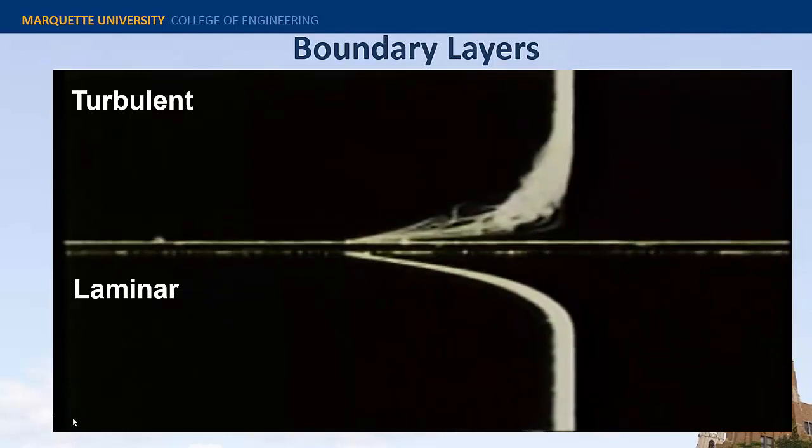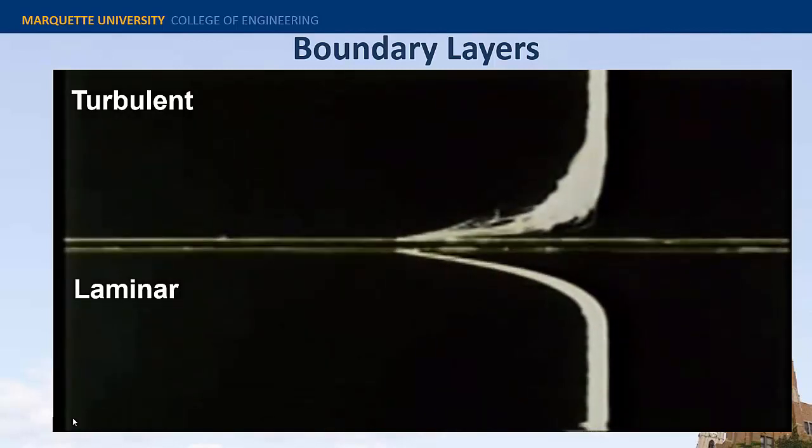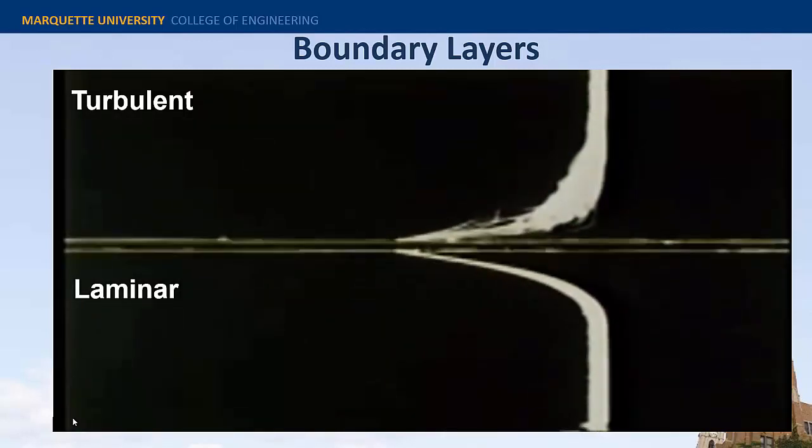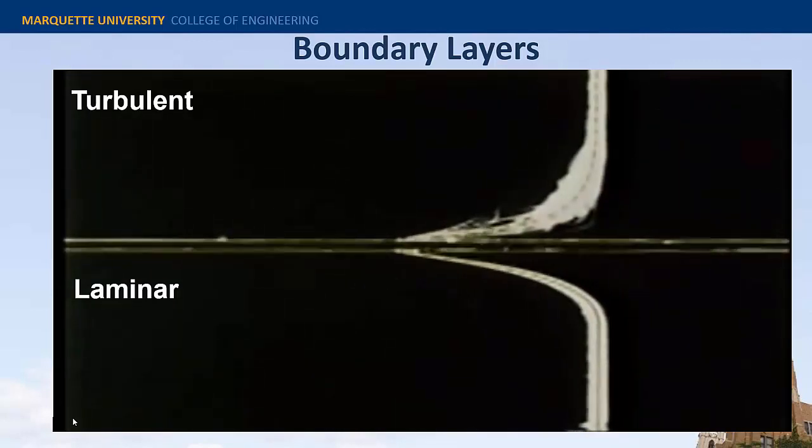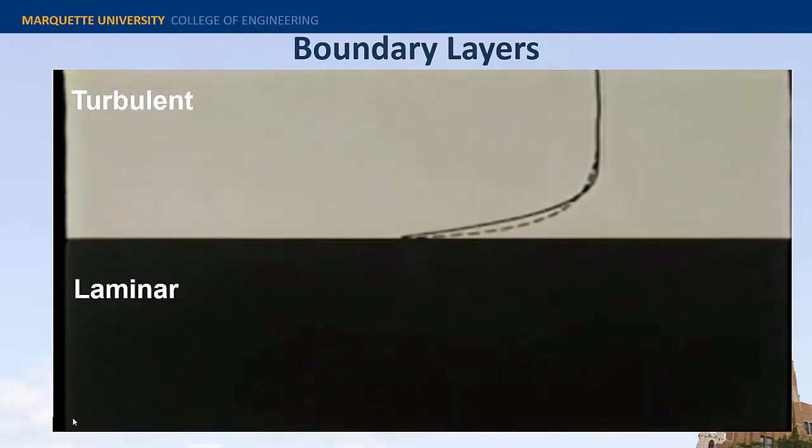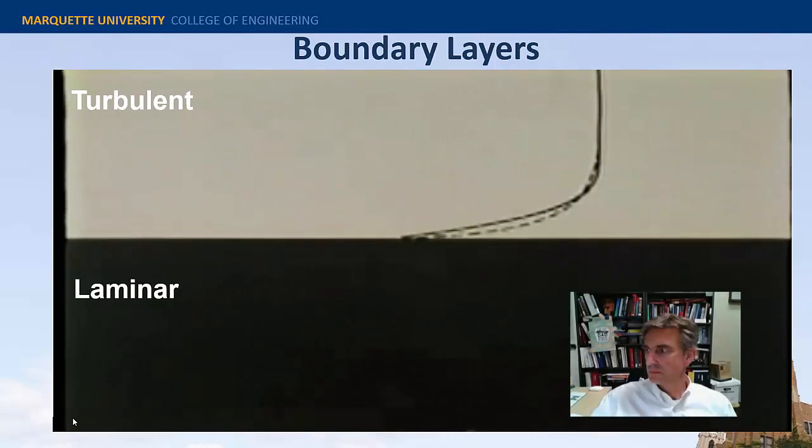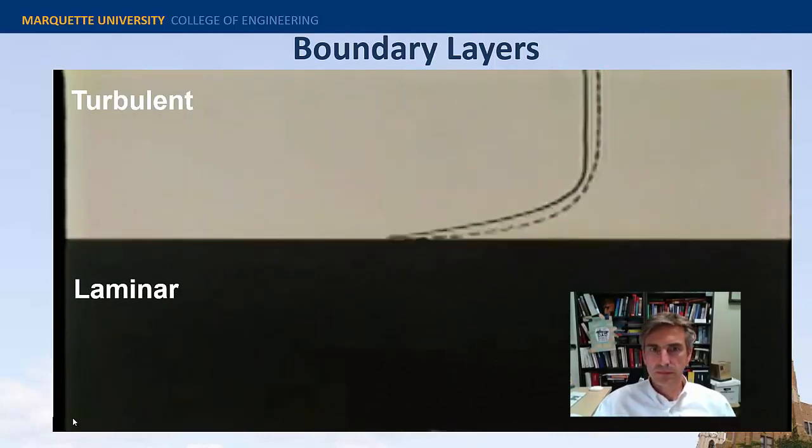In this photograph we can compare mean laminar and turbulent profiles. Here is the laminar one, the turbulent one, and here they are superimposed. The velocity gradient normal to the plate is larger for the turbulent layer and it therefore has a larger wall shear stress or drag.